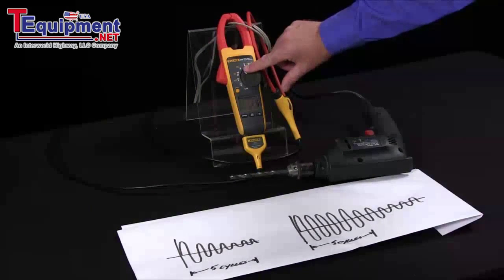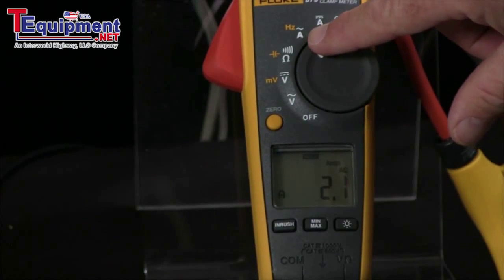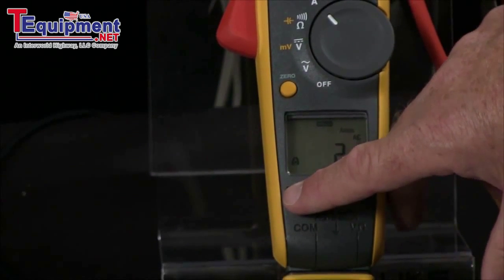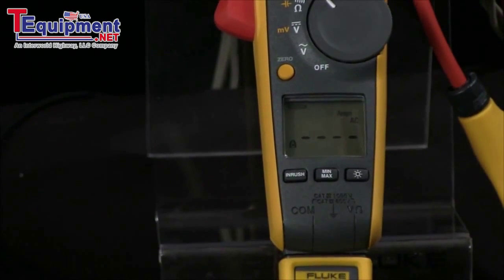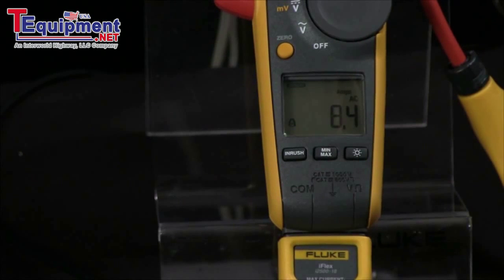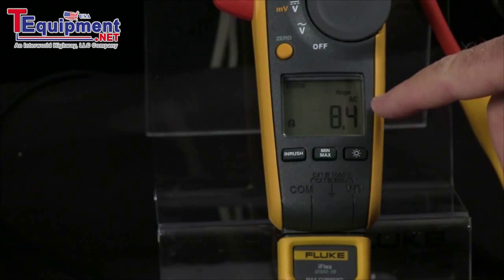we turn the clamp meter to the amp function and here we have the running current. To see what the starting or the inrush current is, I press inrush. The meter waits for the motor to start and then it captures my inrush so we can see that we have 8 amps versus the 2 amps.